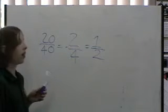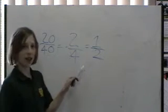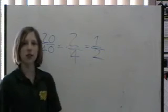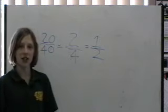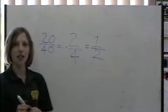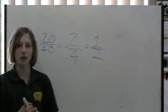We've started off with 20 on 40 and then we simplified it down to 1 half. When doing calculations, it's easier to use 1 half than 20 fortieths. This is why simplification is important.